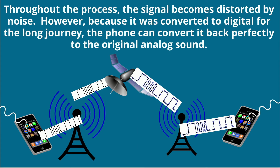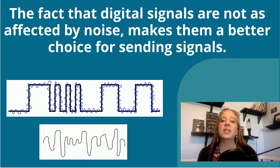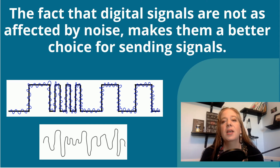Throughout the process, the signal becomes distorted by noise. However, because it is converted to digital for the long journey, the phone can convert it back perfectly to the original analog sound. If it was sent using only analog, the signal would become too distorted to make out what the original sound was. The fact that digital signals are not as affected by noise makes them a better choice for sending signals.